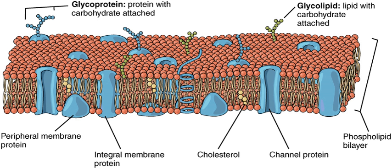For all cells, membrane fluidity is important for many reasons. It enables membrane proteins to diffuse rapidly in the plane of the bilayer and to interact with one another, as is crucial in cell signaling. It permits membrane lipids and proteins to diffuse from sites where they are inserted into the bilayer after their synthesis to other regions of the cell. It allows membranes to fuse with one another and mix their molecules, and it ensures that membrane molecules are distributed evenly between daughter cells when a cell divides. If biological membranes were not fluid, it is hard to imagine how cells could live, grow, and reproduce.